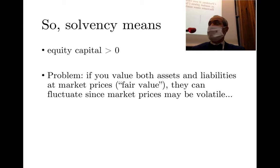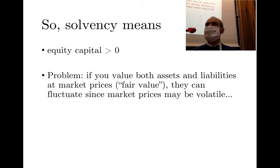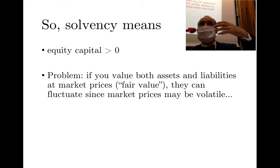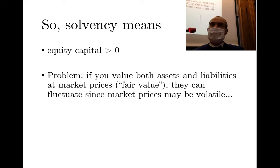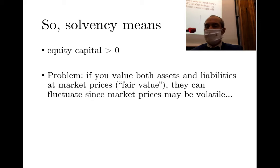This abstract example shows that solvency means the equity capital of the bank is above zero — more broadly, having enough equity capital to cover losses on the asset side. Once you have an idea of the volatility of the asset side, you know how much capital you must hold to absorb losses. This is solvency — quite simple in the abstract.